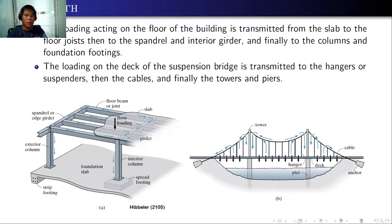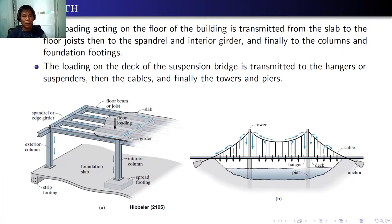For the load path, as we discussed last time, the loads should be transferred from the slab towards the floor beam or joist, to the girder which is a larger beam, and transferred to the column, to the foundation or footing. That's the usual load path for a vertical structure or a building.